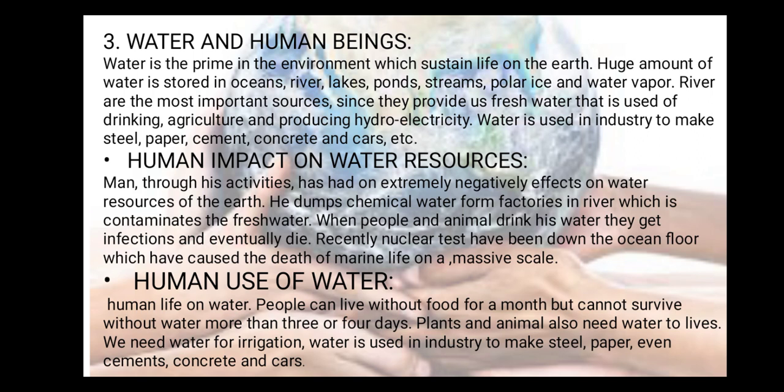In Antarctica, about 70% of the Earth's fresh water is found. Not all water is fresh water — oceanic water is marine water, and fresh water is what we use for drinking and agriculture. Human impact on water resources: man, through his activities, has had an extremely negative effect on water resources. He dumps chemical waste from factories into rivers, which contaminates fresh water. When people and animals drink this water, they get infected and can eventually die.